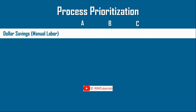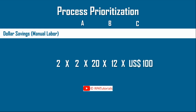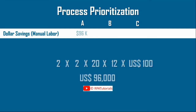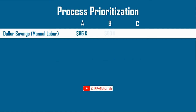if there are two personnel involved in the process who work two hours every day, for 20 days in a month, 12 months in a year, and their cost is $100 per hour, then the annual dollar saving for process A is $96,000. Similarly, for process B it could be $80,000, and process C it could be $120,000.